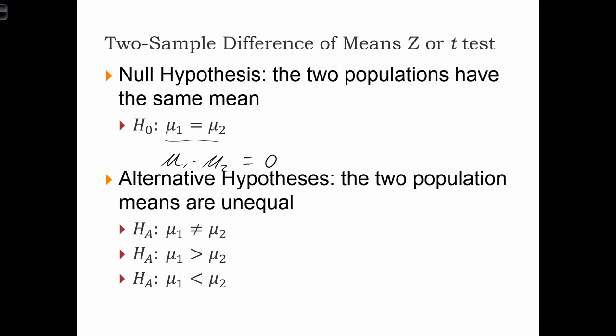In the alternative hypotheses, we have three options. The first one is non-directional, mu1 doesn't equal mu2, and then we can have the two directional cases. The first mean is greater than the second mean, or the first mean is less than the second mean. And so these are the directional cases.